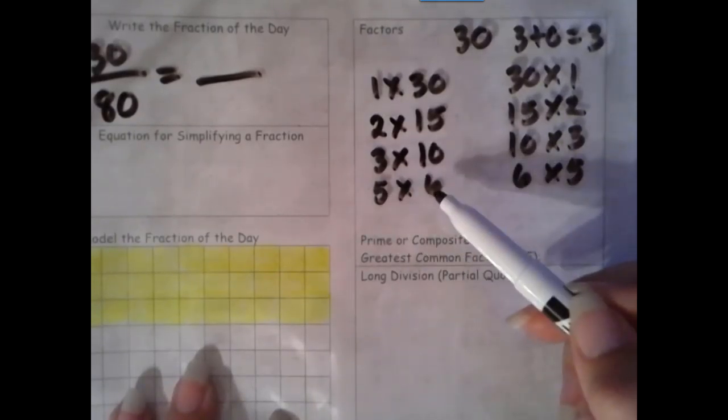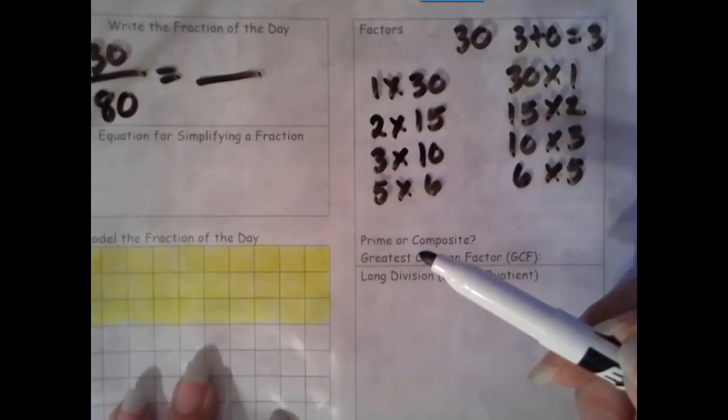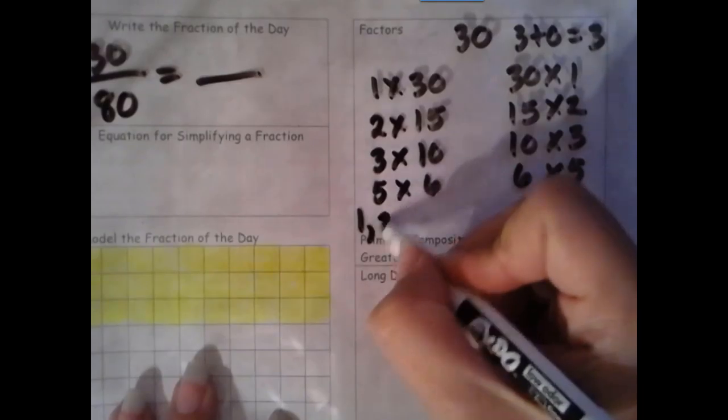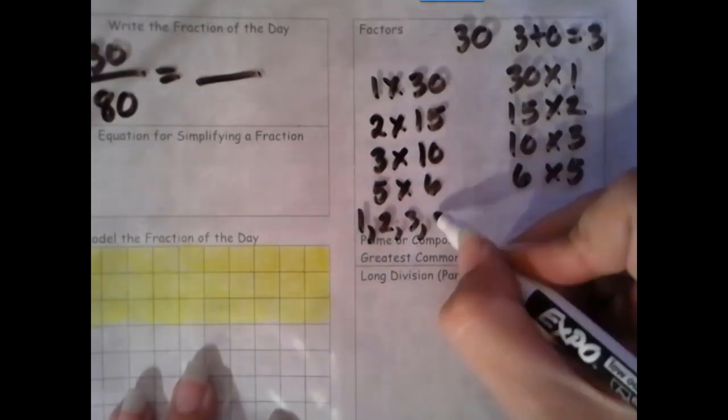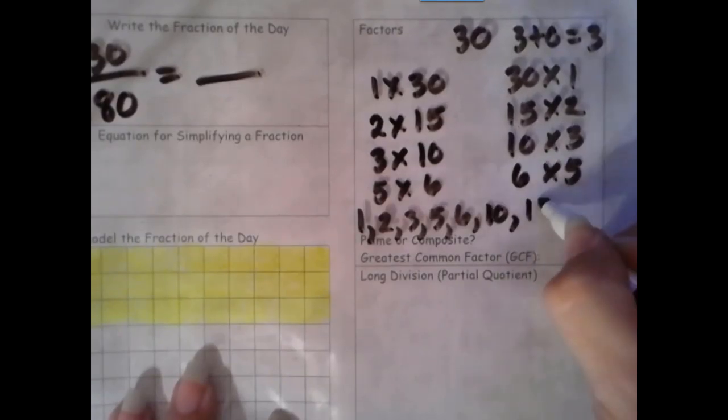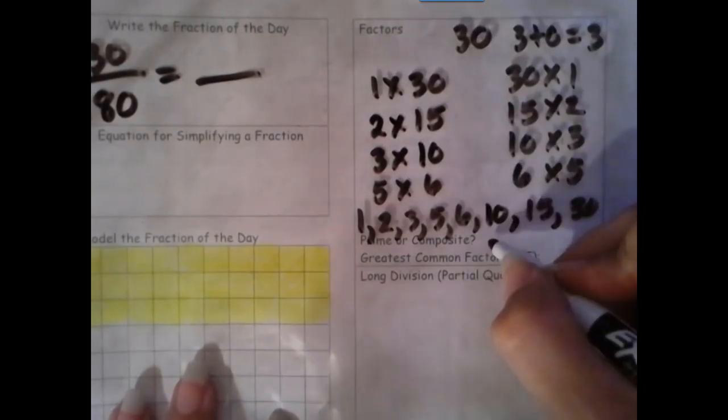There are no natural or counting numbers between 5 and 6. So we're done. Let's list our factors from least to greatest. 1, 2, 3, 5, 6, 10, 15, 30. So we have 8 factors. That is more than 2 factors, so it is composite.